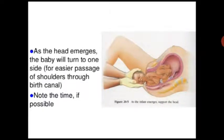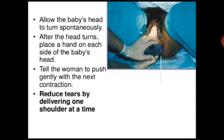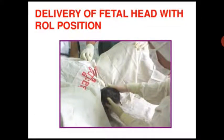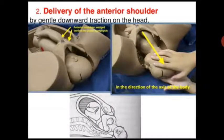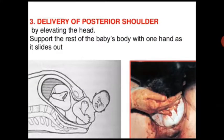As the head emerges, the baby will turn to one side for easier passage of the shoulder through the birth canal. Note the time if possible. Allow the baby's head to turn spontaneously. After the head turns, place a hand on each side of the baby's head and tell the woman to push gently with the next contraction. Reduce tears by delivering one shoulder at a time — first the anterior shoulder by gently downward traction of the head, then the posterior shoulder by elevating the head. Support the rest of the baby's body with one hand as it slides out.